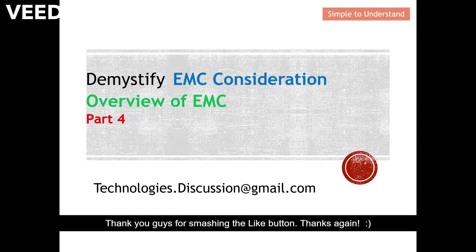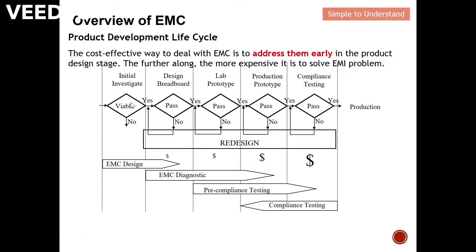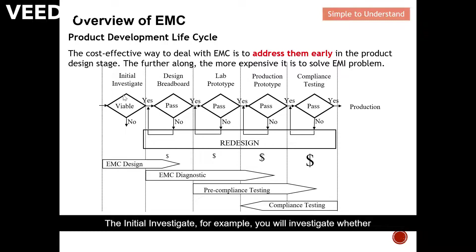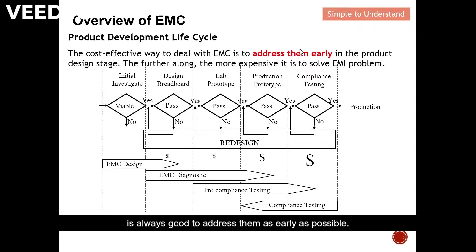This diagram here shows the product development life cycle. You can see there are five phases. The initial phase is to investigate whether the project is feasible. Next is the design breadboard phase — all the design at this stage is very preliminary. If you intend to pass EMC, it is always good to address it as early as possible, ideally in the design breadboard phase.